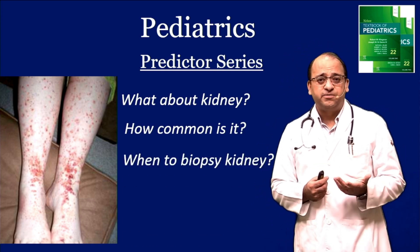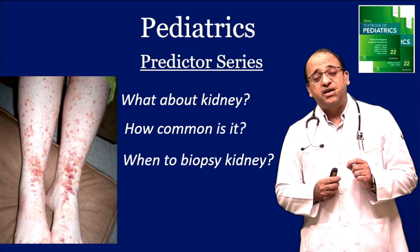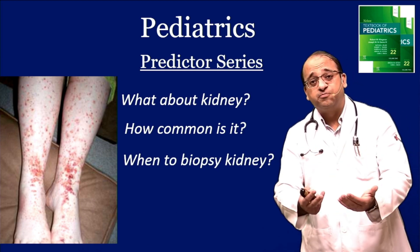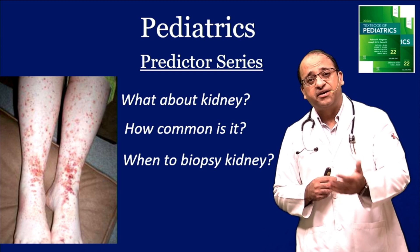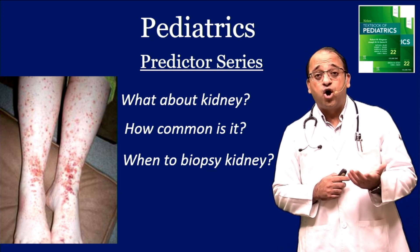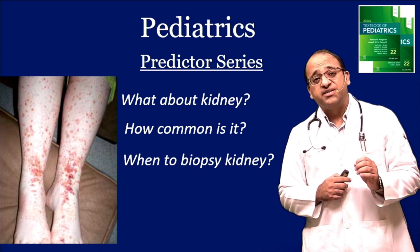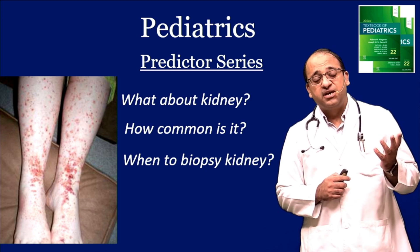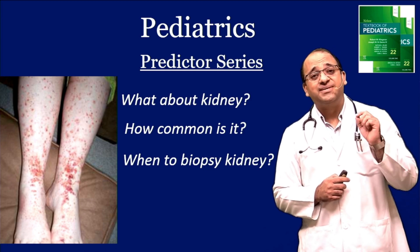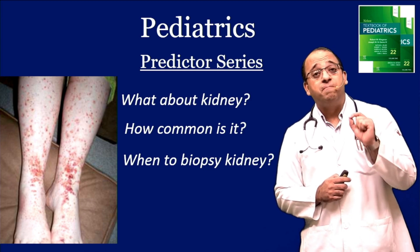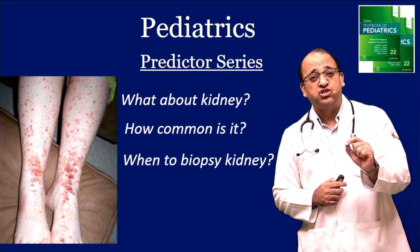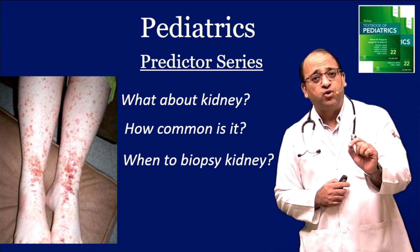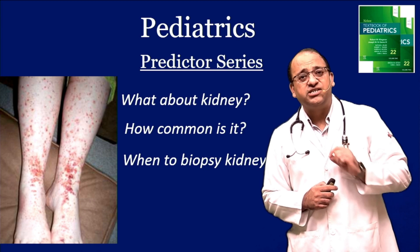When do we biopsy these children? We biopsy if the patient has severe nephrotic range proteinuria or if there is rapidly progressive glomerulonephritis. What do we see on biopsy? We see mesangial proliferation with mesangial IgA deposition — remember: mesangial proliferation and mesangial IgA deposition.